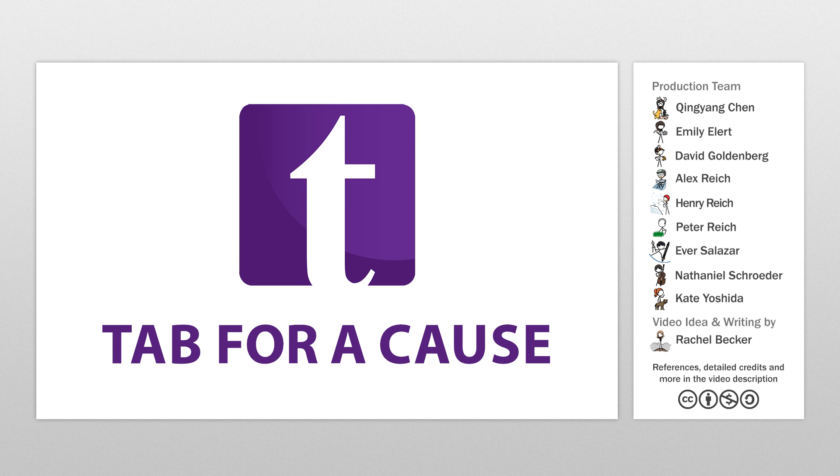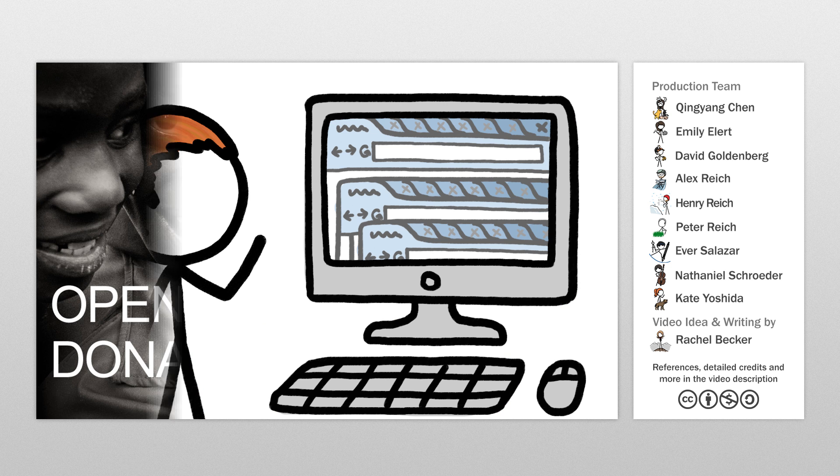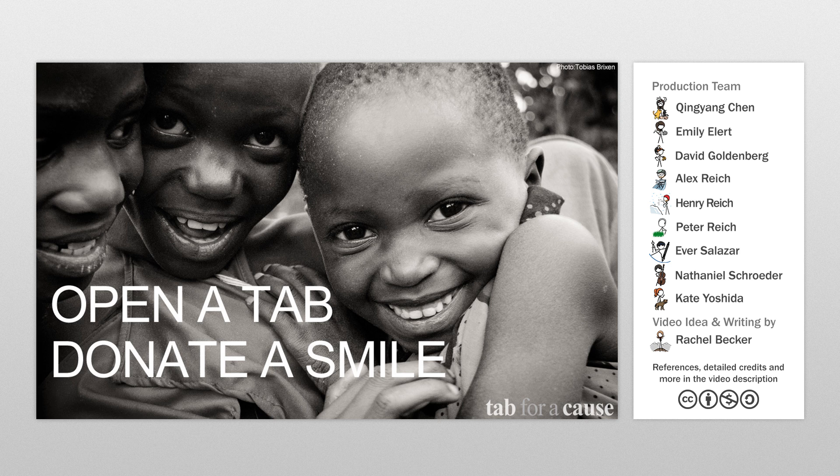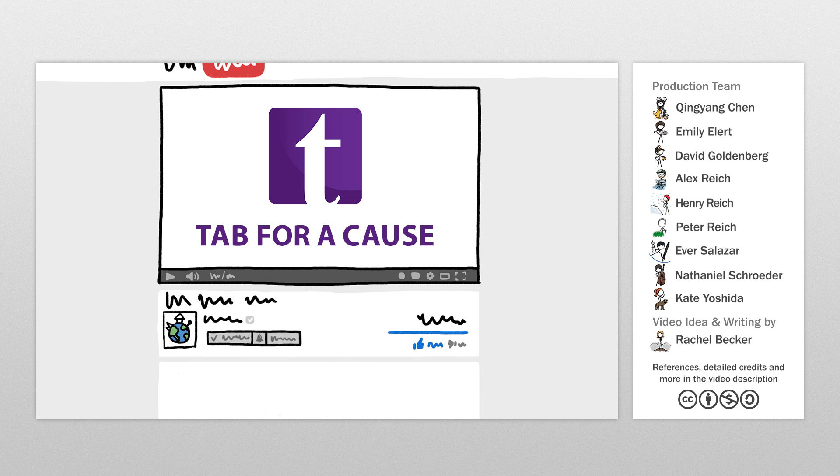This episode of MinuteEarth is sponsored in part by Tab for a Cause. If you're like me, you open a lot of tabs in your browser. Tab for a Cause is a browser extension that donates to charity with each new tab you open, which means lots of money for non-profits like Conservation International and Human Rights Watch without costing you a thing. The last time we featured Tab for a Cause, MinuteEarthlings like you raised more than $10,000. Click the link in the description to help us do even better this time.